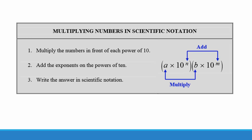To multiply two numbers that are written in scientific notation, you multiply the numbers in front of each power of 10. Then add the exponents on the powers of 10. Then make sure that the answer is in scientific notation.